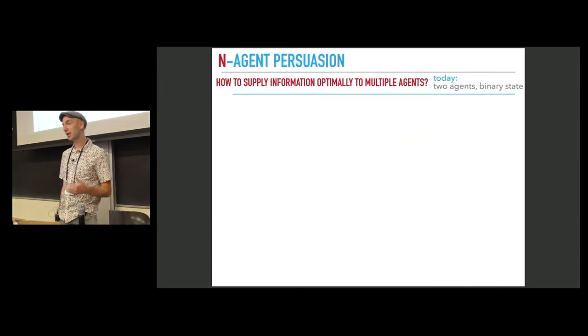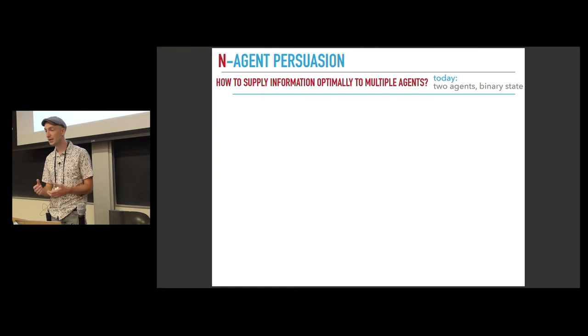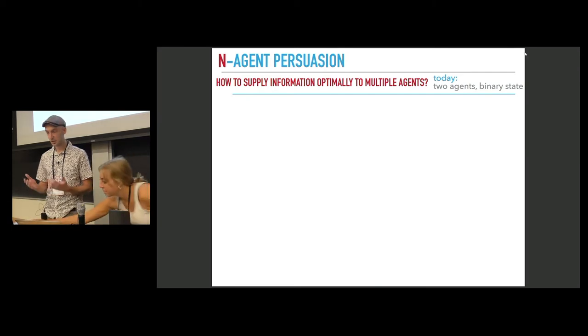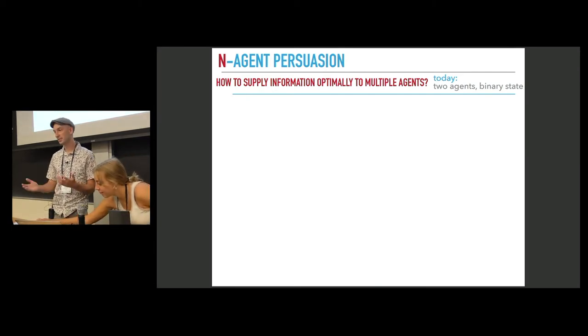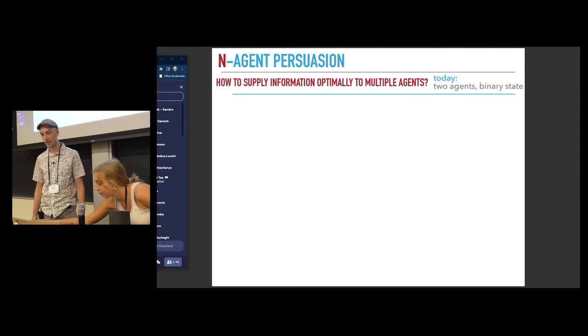In this work, we consider agent persuasion problems. We're interested in the question of how to supply information optimally to multiple receivers. In this talk I will focus on the case of two receivers and the binary state, even though the results generalize.